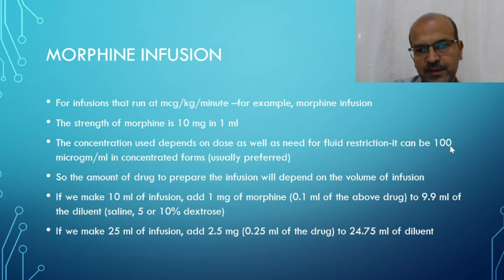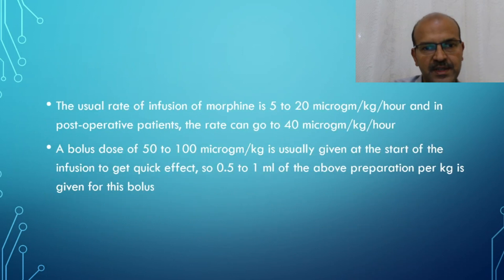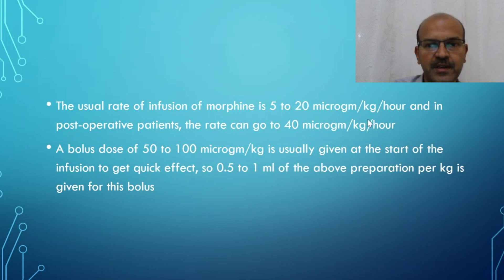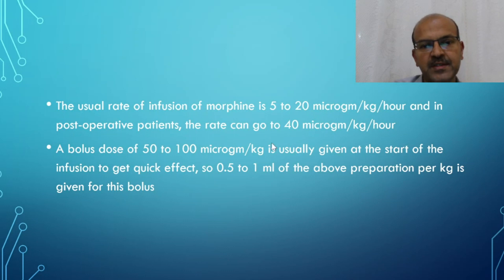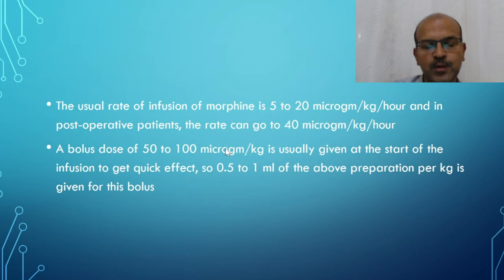There is another strength of morphine at 40 to 50 microgram per ml if you want to use a more diluted version. The usual rate of morphine infusion is 5 to 20 microgram per kilogram per hour, and in post-operative patients the rate can go up to 40 microgram per kilogram per hour for better pain relief. A bolus dose of 50 to 100 microgram per kilogram is usually given at the start of the infusion — that equates to 0.5 to 1 ml per kilogram of the 100 microgram per ml preparation.